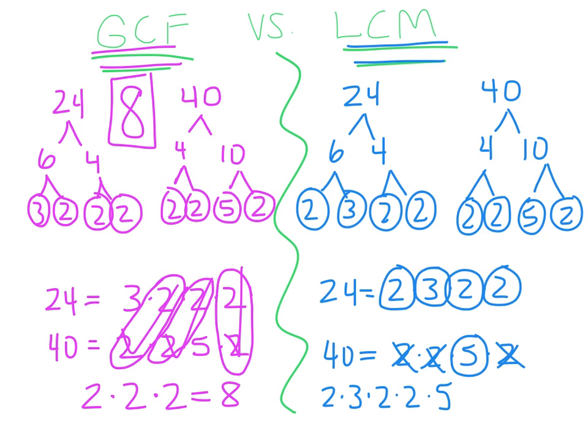So now you just multiply straight across. So I've got 2 times 3. Let me get my pointer. 2 times 3 is 6. 6 times 2 is 12. 12 times 2 is 24. 24 times 5 happens to be 120. So my least common multiple of 24 and 40 is 120.